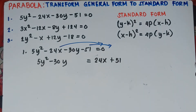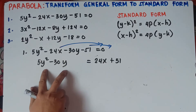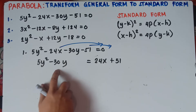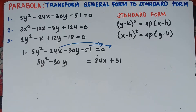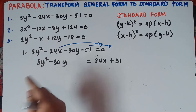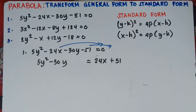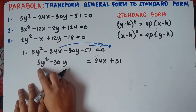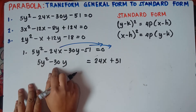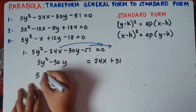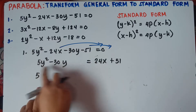Before doing completing the square, check the y-variable terms first. Can we factor 5 and 30? Think about the greatest number that divides both. We can divide both 5 and 30 by 5, so the GCF is 5. So we factor out 5 from the left side.